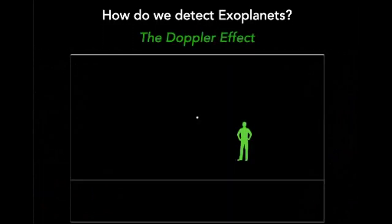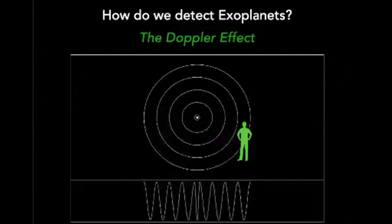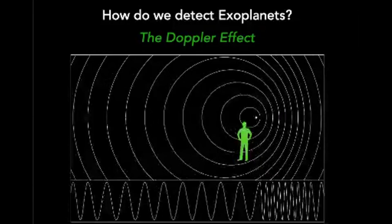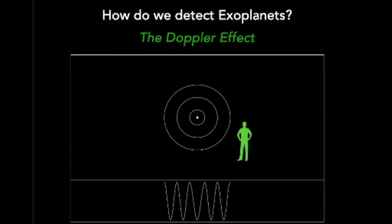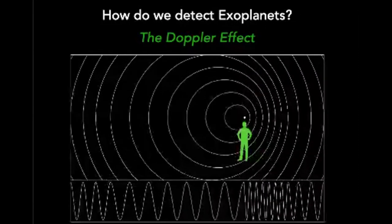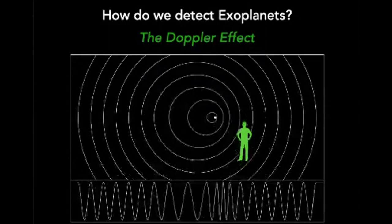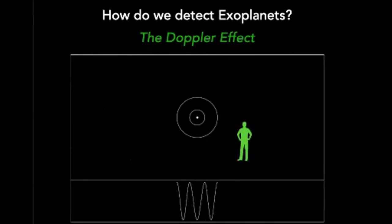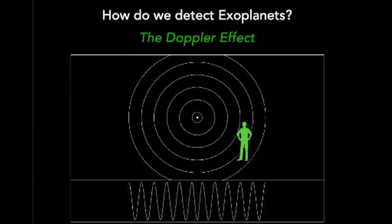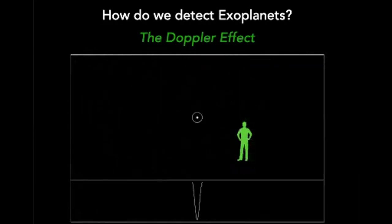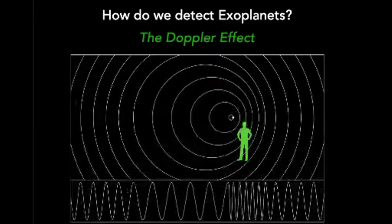Another way to indirectly measure a planet is the Doppler method, which uses the Doppler effect — and I guarantee you've experienced it with sound. If a sound source is moving towards you, the waves bunch up, the wavelength gets shorter, and the pitch is higher. As the source recedes, the waves are further apart, the wavelength gets longer, and the pitch gets lower. That gives you the familiar sound of a car whizzing past.